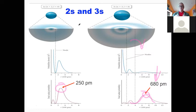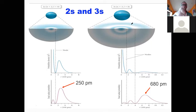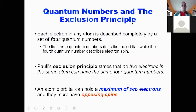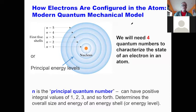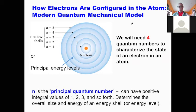It got more complicated when looking at other complex atoms. We need four different numbers to define each individual electron. The first one is the shells — N equals 1, 2, 3, 4, 5 — which simply says how far away the electron is from the nucleus. If it's 1, it's close; if it's 2, it's further; 3, further still, and so on.